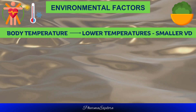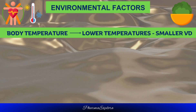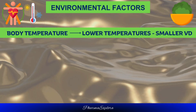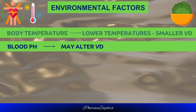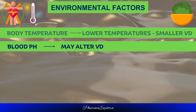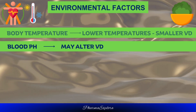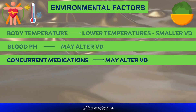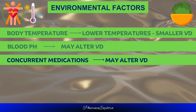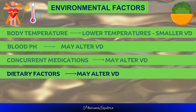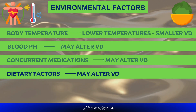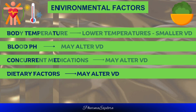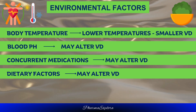Environmental factors affecting volume of distribution include: (1) Body temperature — changes in body temperature can affect drug distribution, with lower temperatures leading to a smaller Vd; (2) Blood pH — changes in blood pH can alter the ionization state of drugs, affecting their distribution; (3) Concurrent medications — interactions with other medications can alter the binding or metabolism of a drug, influencing its Vd; and (4) Dietary factors — certain dietary components, such as grapefruit juice, can inhibit drug metabolism and increase the volume of distribution.